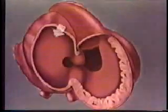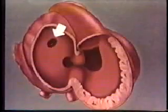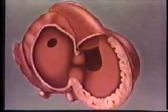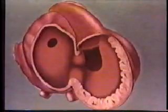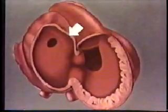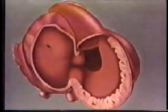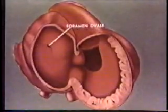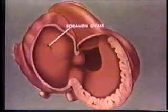Before the foramen primum becomes obliterated, a new opening appears high on the interatrial septum. The timely development of this orifice, the foramen secundum, provides uninterrupted shunting of blood from the right atrium directly into the left. Another interatrial septum, septum secundum, develops from a ridge just to the right of septum primum and extends down like a curtain over the interatrial fenestration. The advanced edge of the septum secundum forms the foramen ovale, with the septum primum acting as a unidirectional flutter valve. Thus, blood can flow only from the right atrium to the left.